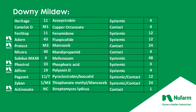Downy mildew is controlled by a multitude of materials. The most highly recommended include Heritage, Camelot-O, Fenstop, Adorn, and Protect, followed by Micora, Subdue Maxx, Fosphite, Affirm, Pageant, Zyban, and Actinovate — all labeled for use on downy mildews.